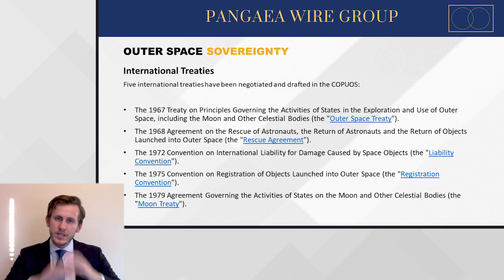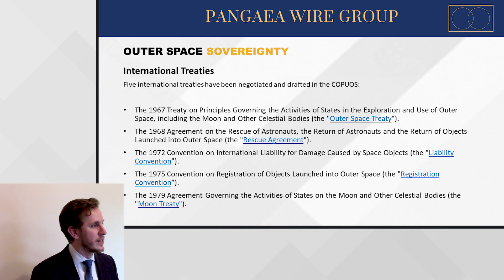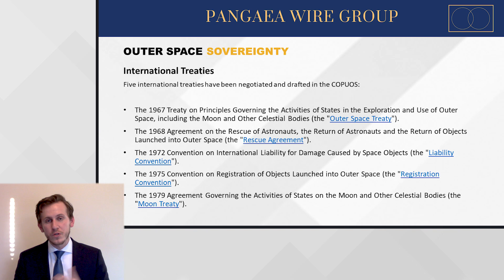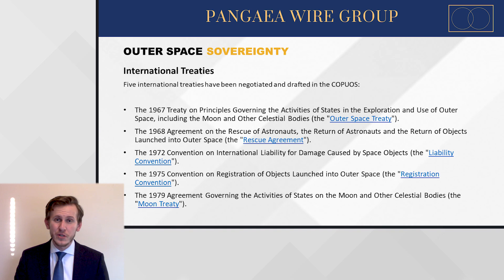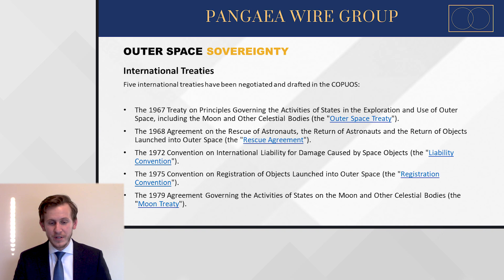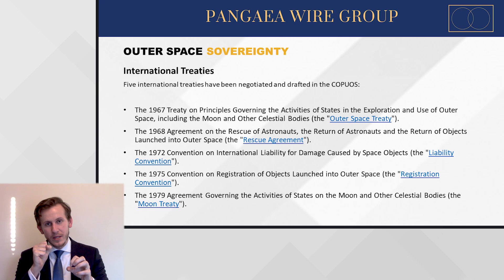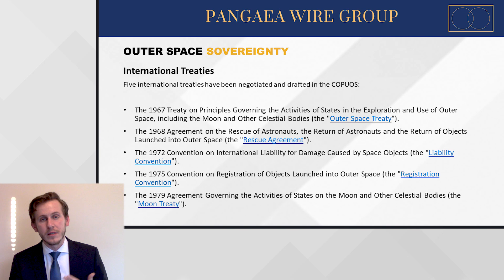Let's start with outer space. Internationally, there have been many treaties signed to set the rules for what sovereignty in outer space means. This began with the Outer Space Treaty in 1967, and subsequent treaties including the Rescue Agreement, the Liability Convention, the Registration Convention, and the Moon Treaty of 1979. But if you were to extract the key part relating to sovereignty, one article really stands forth as the guiding light: Article 2 of the Outer Space Treaty of 1967.